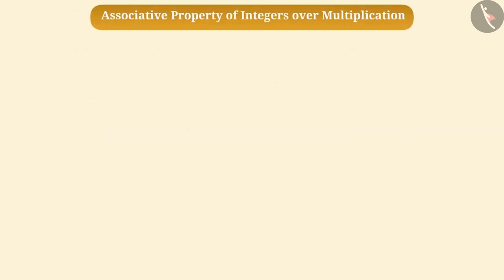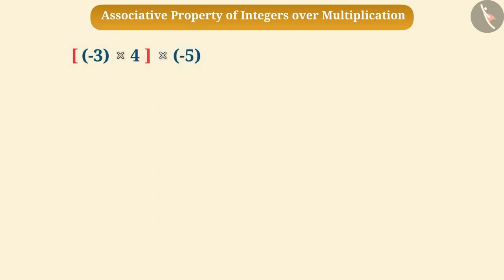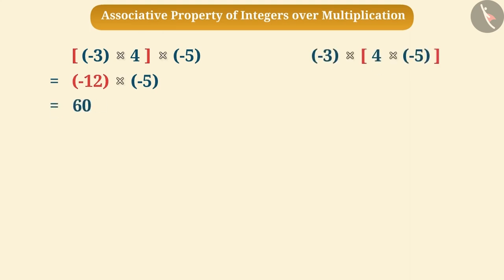Now we will discuss the multiplication of integers and find out whether integers are associative over multiplication. Suppose we need to find the product of minus 3, 4, and minus 5. If we make a group of minus 3 and 4 and find their product, the result will be 60. Similarly, if we make a group of 4 and minus 5 and find the product, the result will also be 60. The answer is the same in both cases.